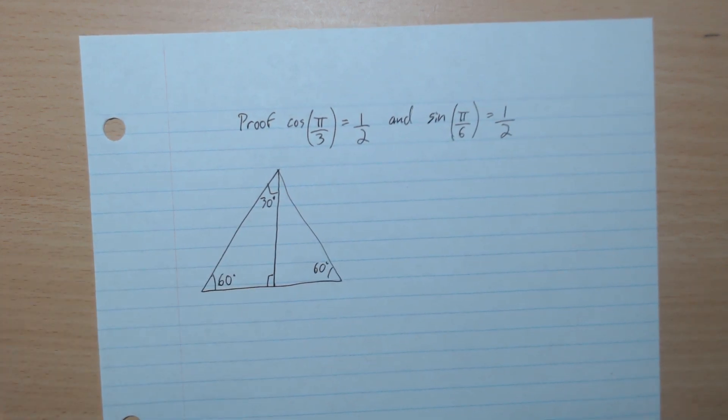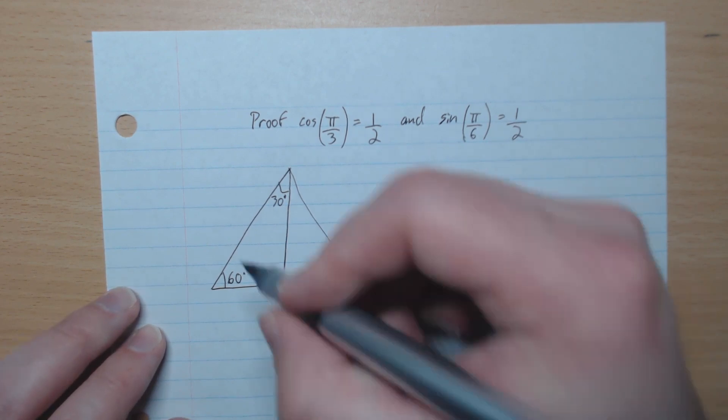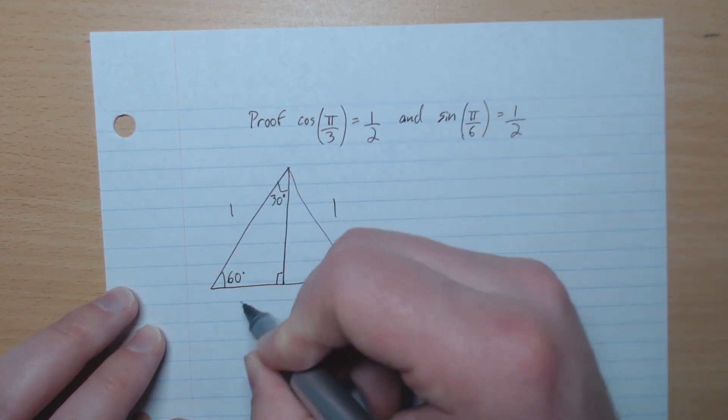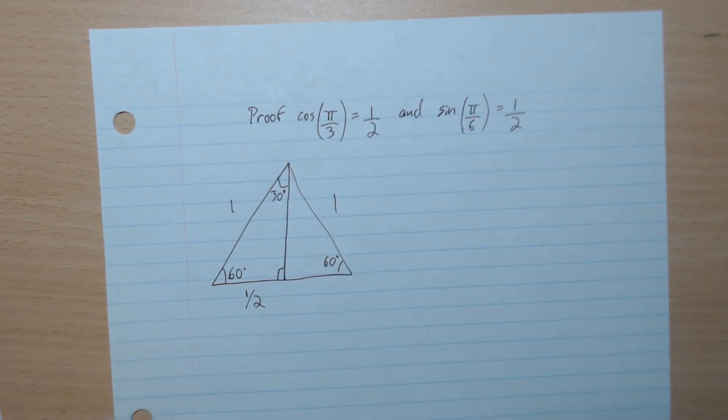That makes this degree 30 degrees. And so here we have 1, 1, and here we have a half, like that.